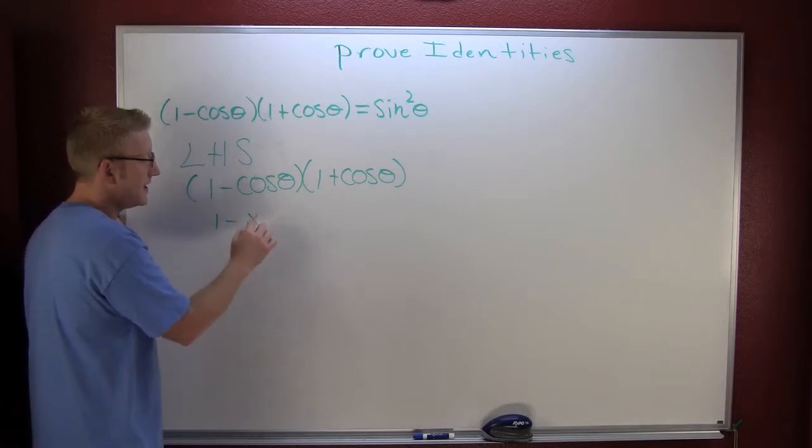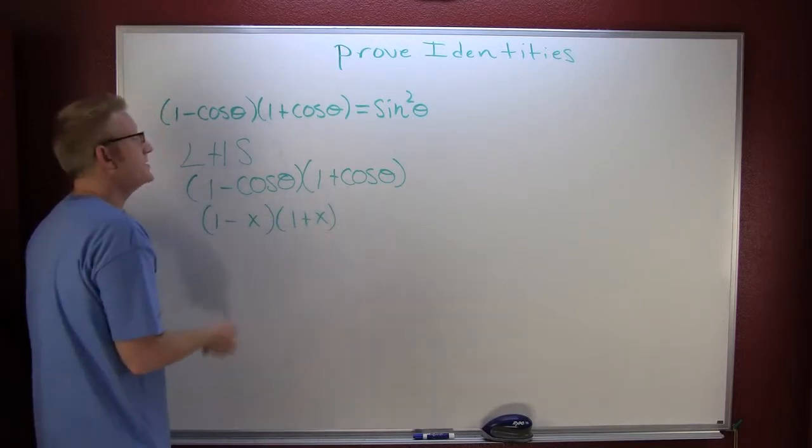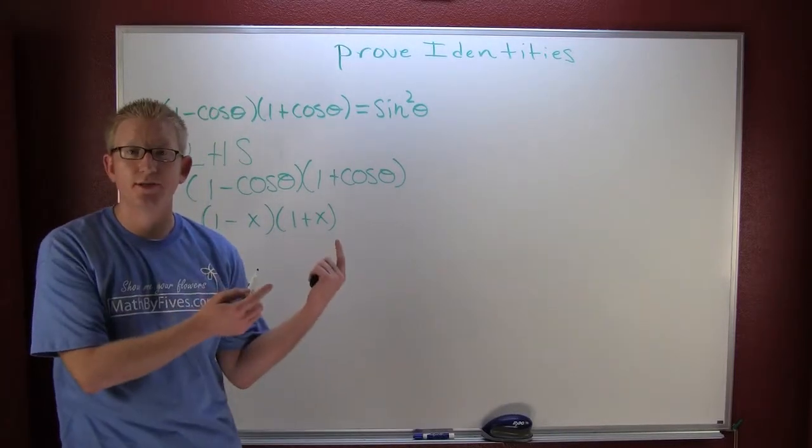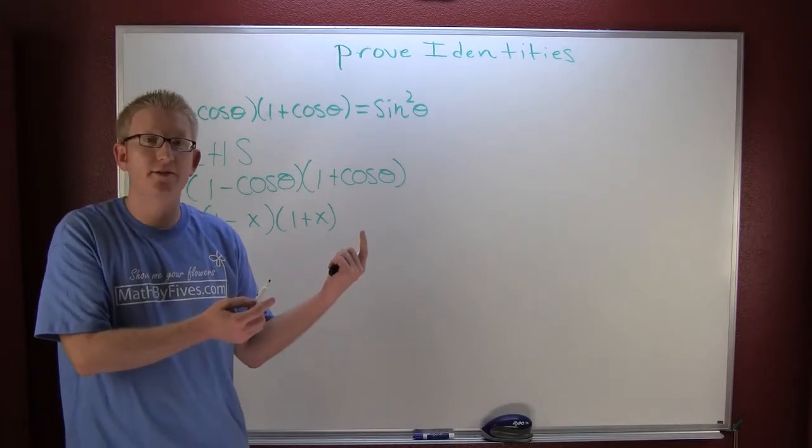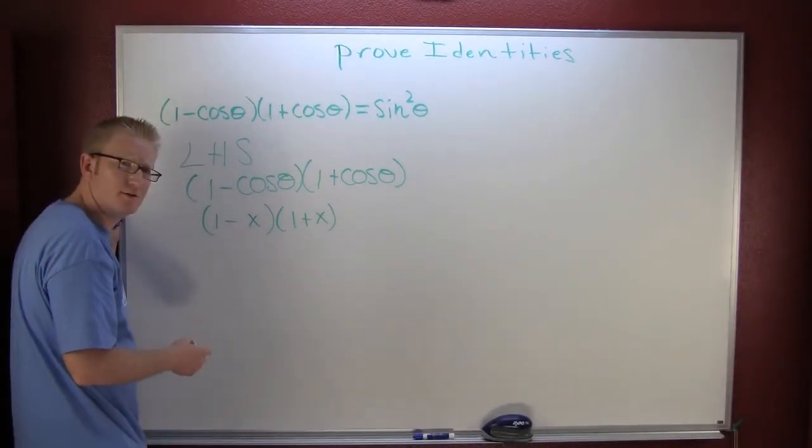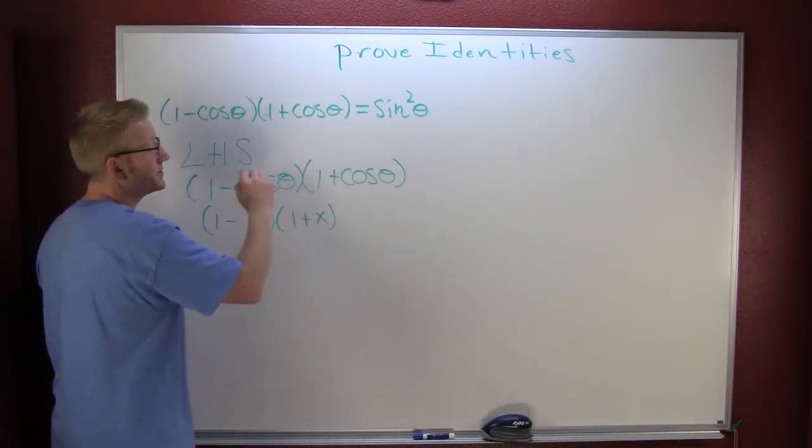Just like in algebra, sometimes it helps to look at it as 1 minus X times 1 plus X. Here I'm just using X as a variable to get you in a more comfortable algebraic world. So now that we're in this world, do you see the difference of squares? Yes. And then if you multiply that out, you could have also FOIL-ed it.